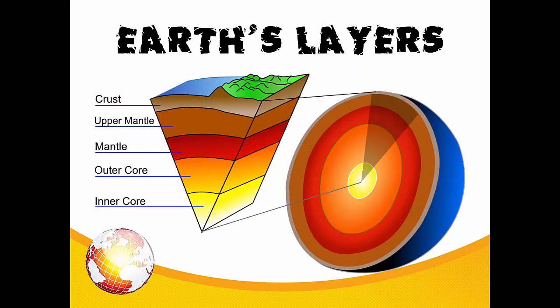Before we go any further, just a quick refresher about planetary structure. Our planet — every planet actually, we think — is made of layers. The Earth's center is called the core. You're looking at approximately 6,000 degrees Celsius down there. Moving out from there, the next major layer is the mantle. The top layer of the planet, where we hang out, is called the crust.